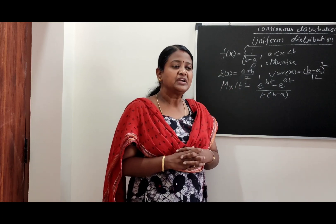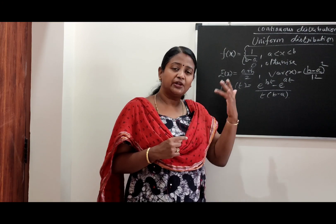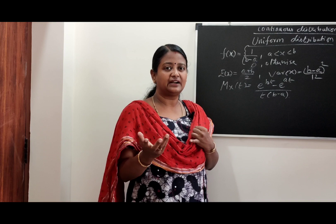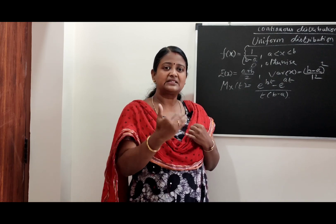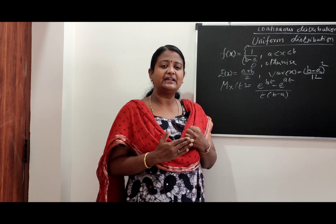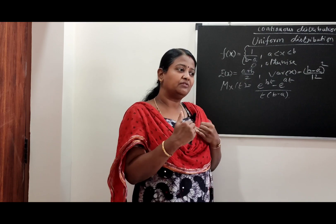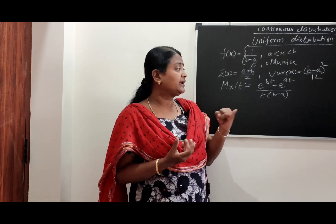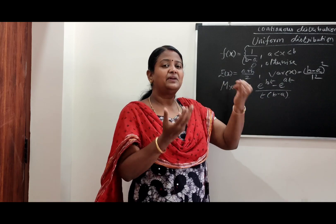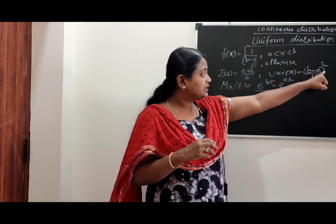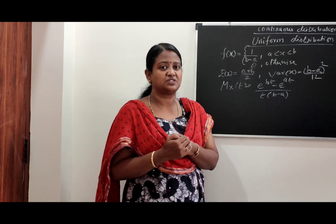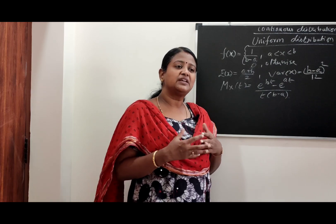In uniform distribution there are two types of problems. We will see different categories: less than a value, greater than a value, at least, at most, and conditional probability. For 2-mark questions, evaluate mean, variance, and probability function using a plus b by 2, and (b - a)² divided by 12, equating the values of a and b. For 8-mark questions, we work out the full problem.